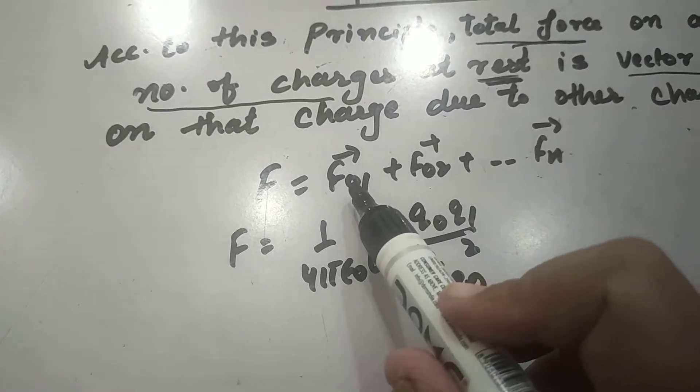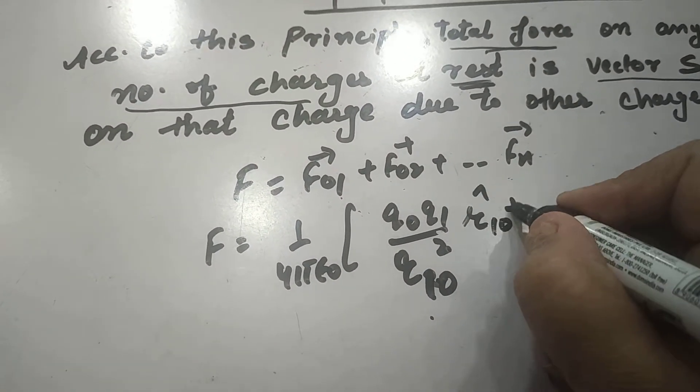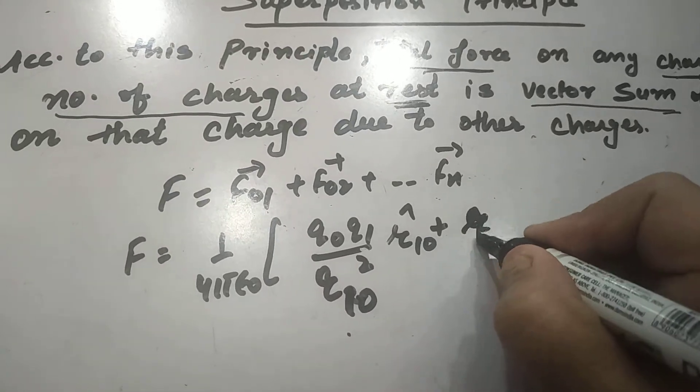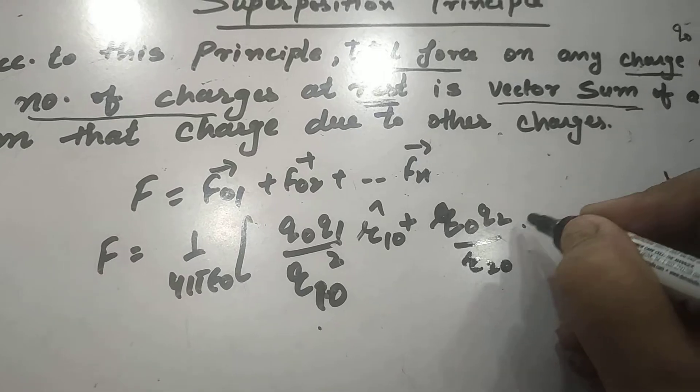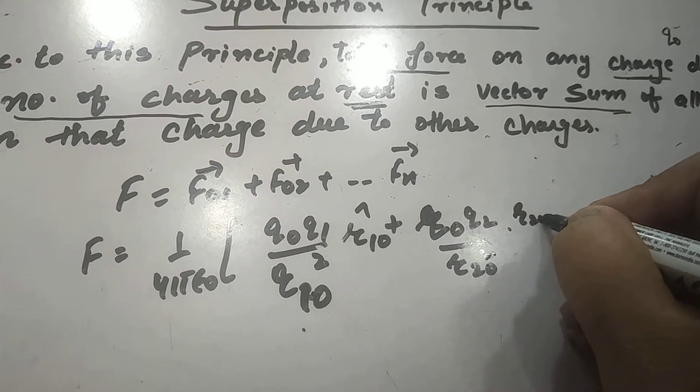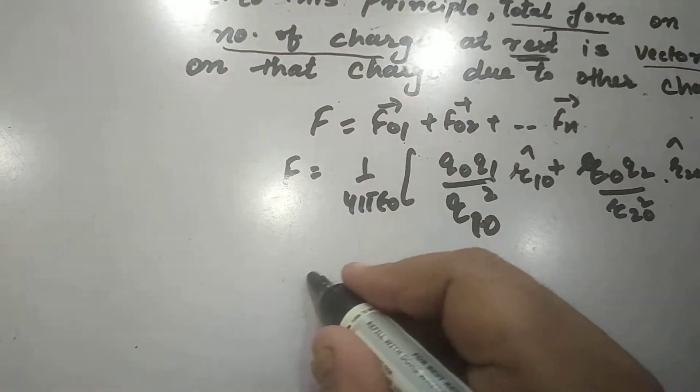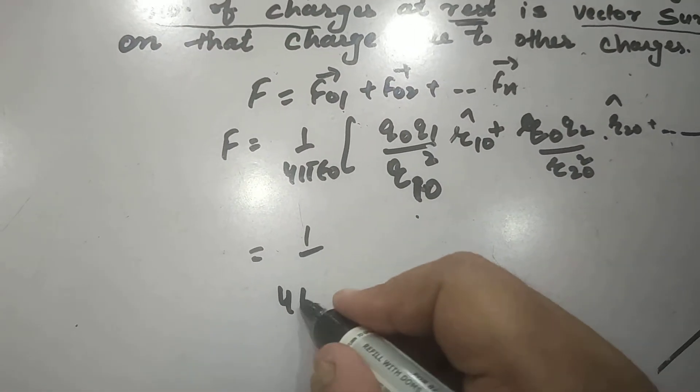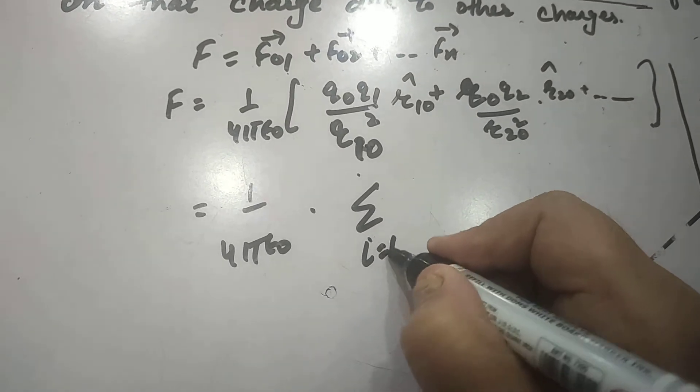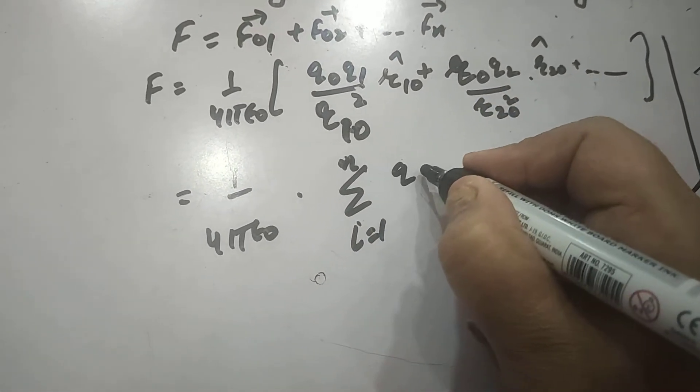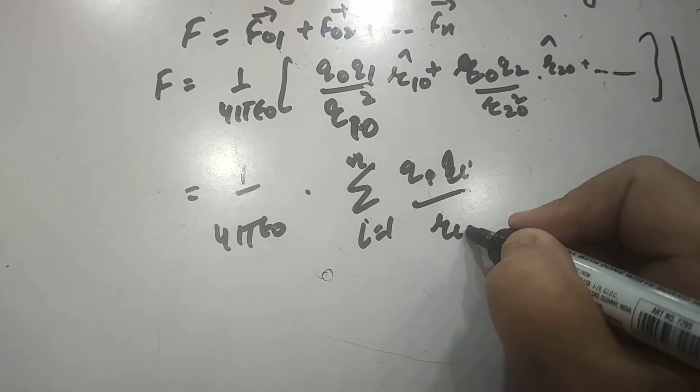Similarly q naught q2 by r20 square r20 vector and plus so on. This can be written as summation i equals 1 to n, q naught qi upon ri naught square into ri naught cap.